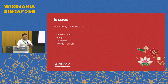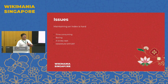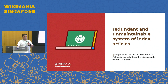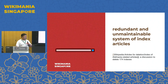But here comes the issue — maintaining an index is very hard. It's very time-consuming if done manually. It's a boring task because you have to copy links one by one. It's also a lonely task, because no one else knows what you're doing, and it requires maximum effort. It got to a point where there was actually an AfD discussion to delete 174 indexes — all indexes related to country and region topics. The opening statement described them as a 'redundant and unmaintainable system of index articles.'